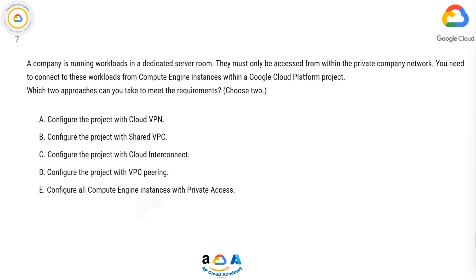A company is running workloads in a dedicated server room. They must only be accessed from within the private company network. You need to connect to these workloads from Compute Engine instances within a Google Cloud Platform project. Which two approaches can you take to meet the requirements?